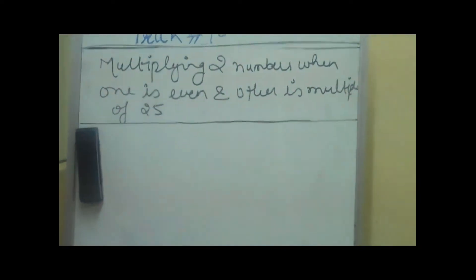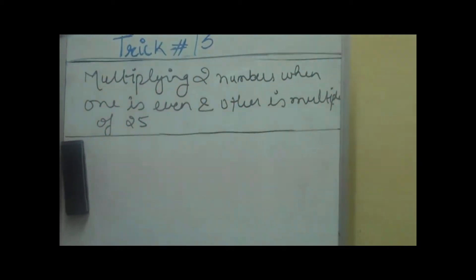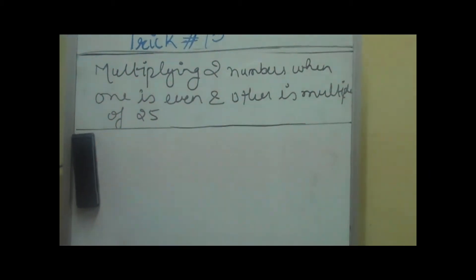Today we are going to talk about the 13th trick, which is multiplying two numbers when one number is even and the other is a multiple of 25.